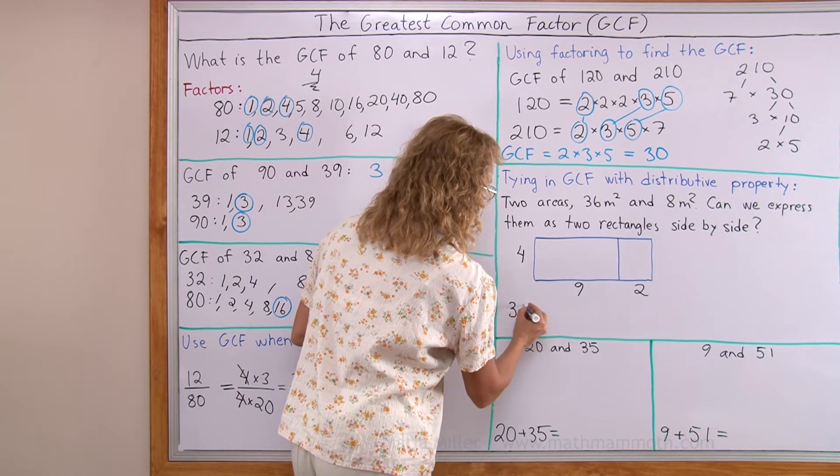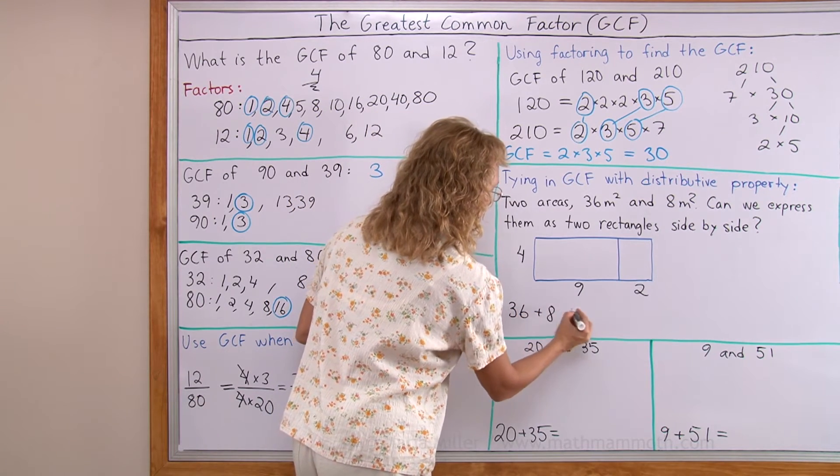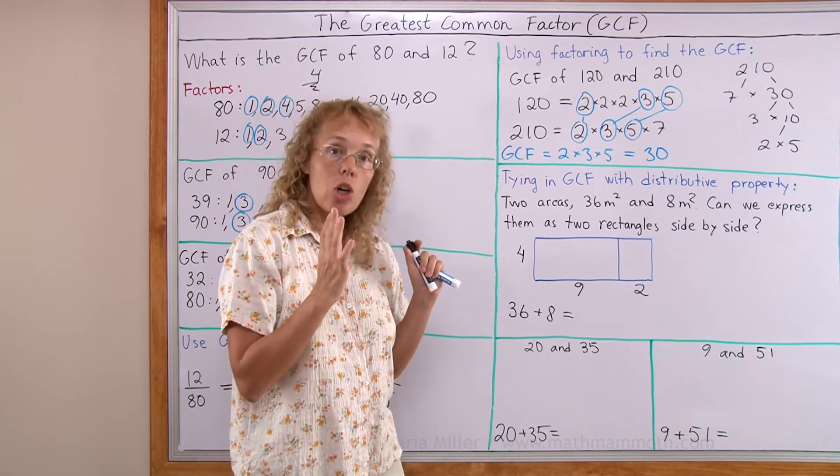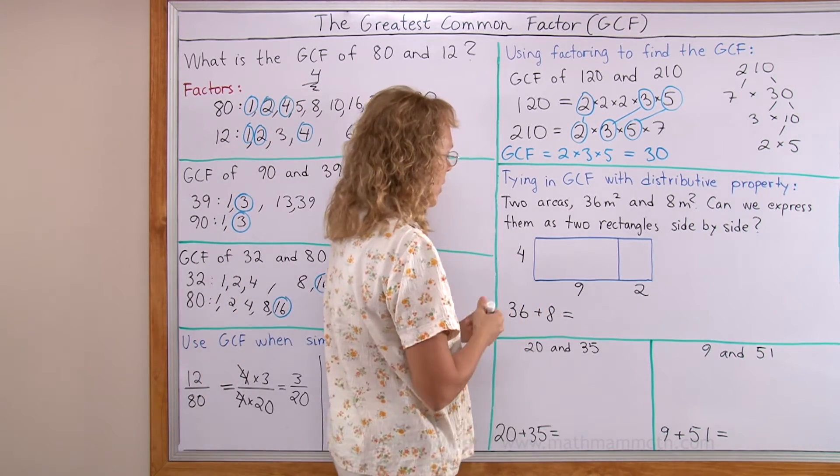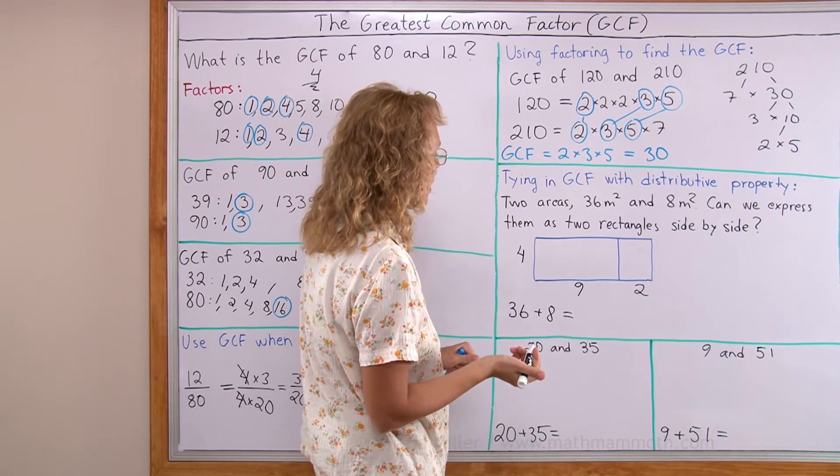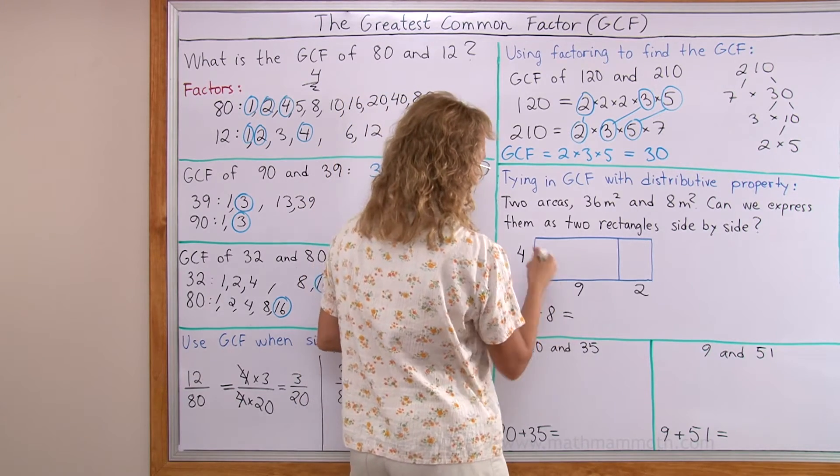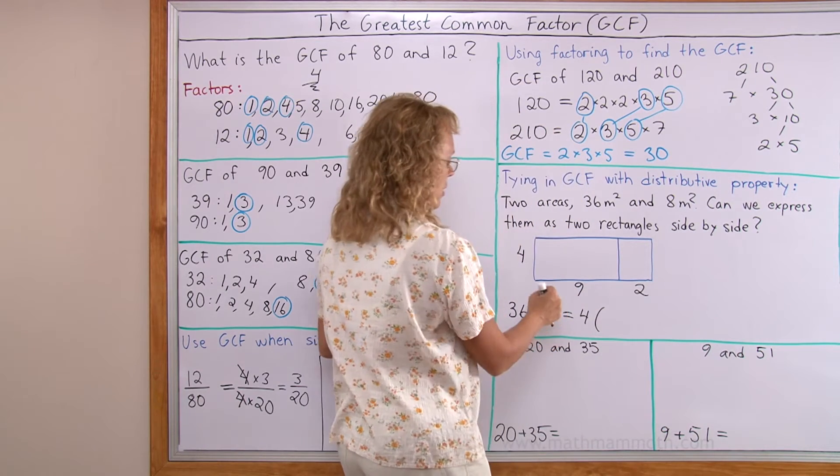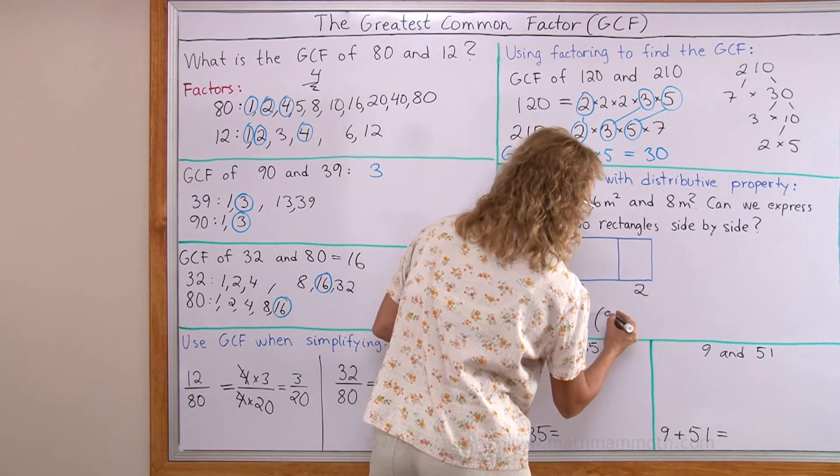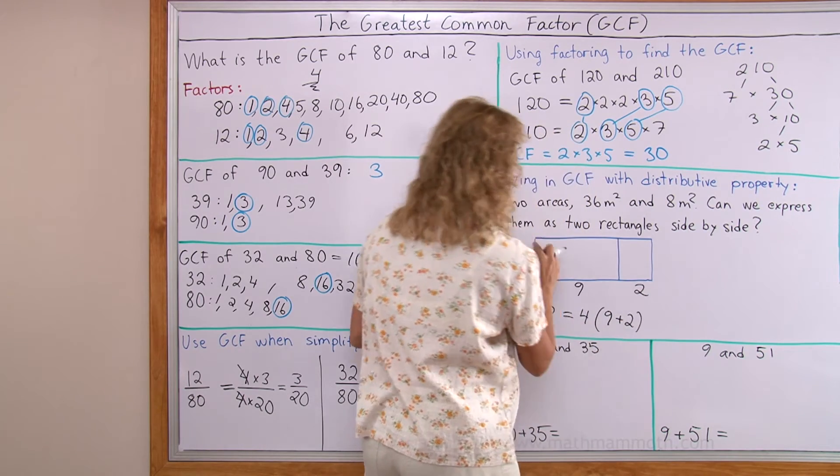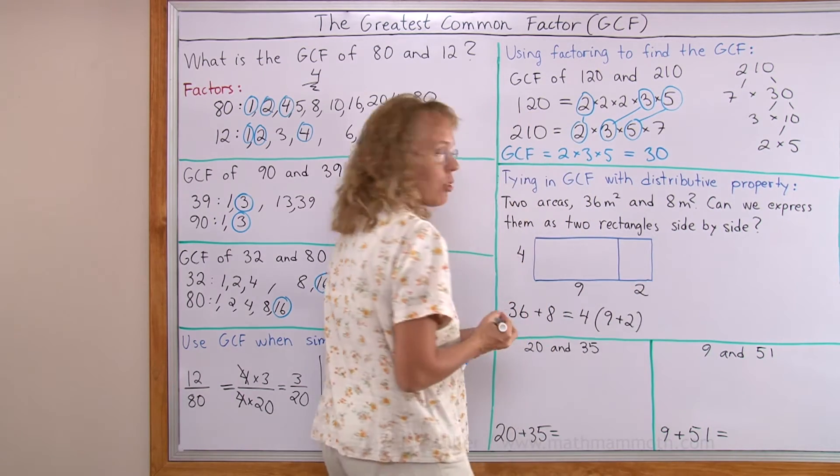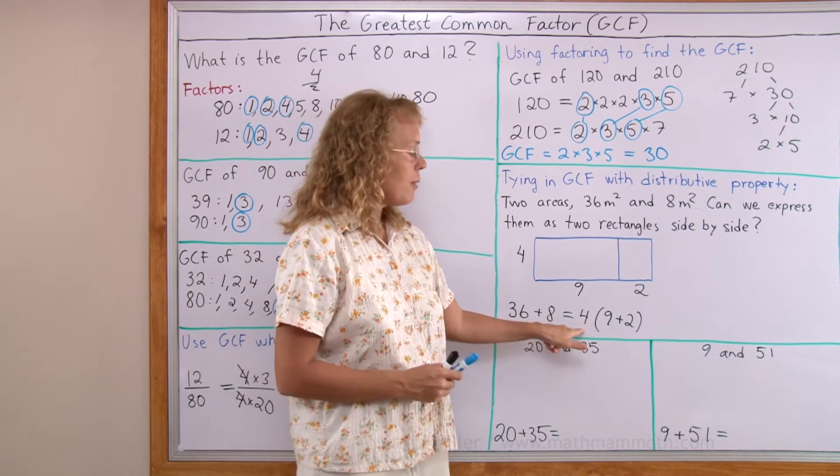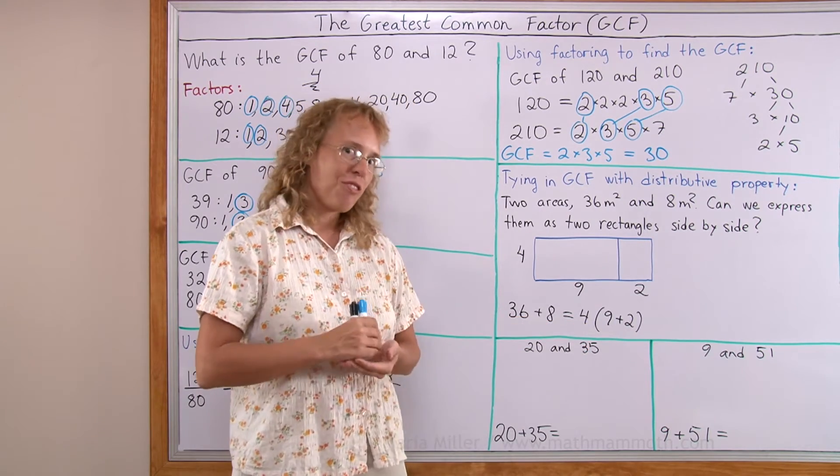Now, I'm gonna write here an addition, 36 plus 8. That's the area of the whole big rectangle. But, I'm gonna express it now as 4 times, 4 times and then this is 9 plus 2. This side is 9 plus 2. 4 times this side is the total area.